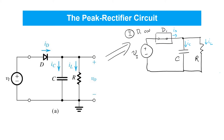It'll be the sum of the current being used to charge up the capacitor C and the current delivered to the load resistor R. This is an important difference between the peak rectifier and the simple half-wave rectifier. The forward current the diode has to handle is larger than in the simple half-wave rectifier, where it only had to deliver current to the load resistor R. Now it's also got to deliver the additional current to charge up capacitor C.